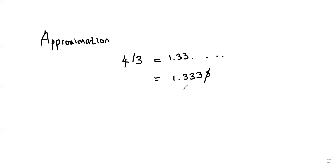Not only calculators — any digital or electronic device uses this approximation method, since they cannot store a number fully if it has infinite decimal digits or more digits than their storage capacity. They approximate first and then store. We know that when we approximate we are going to get an error, and we will calculate that using relative error and absolute error, which we will be learning in the next few videos.